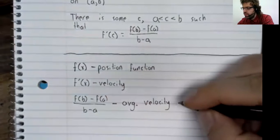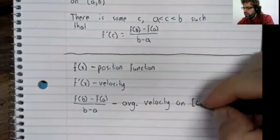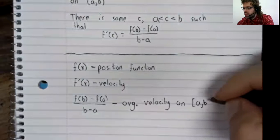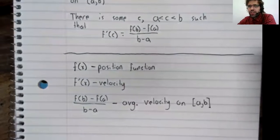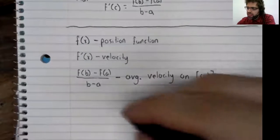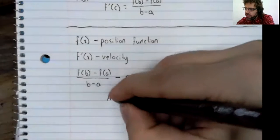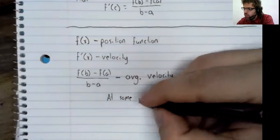And all the Mean Value Theorem is saying is that at some point, your exact velocity equals your average velocity.